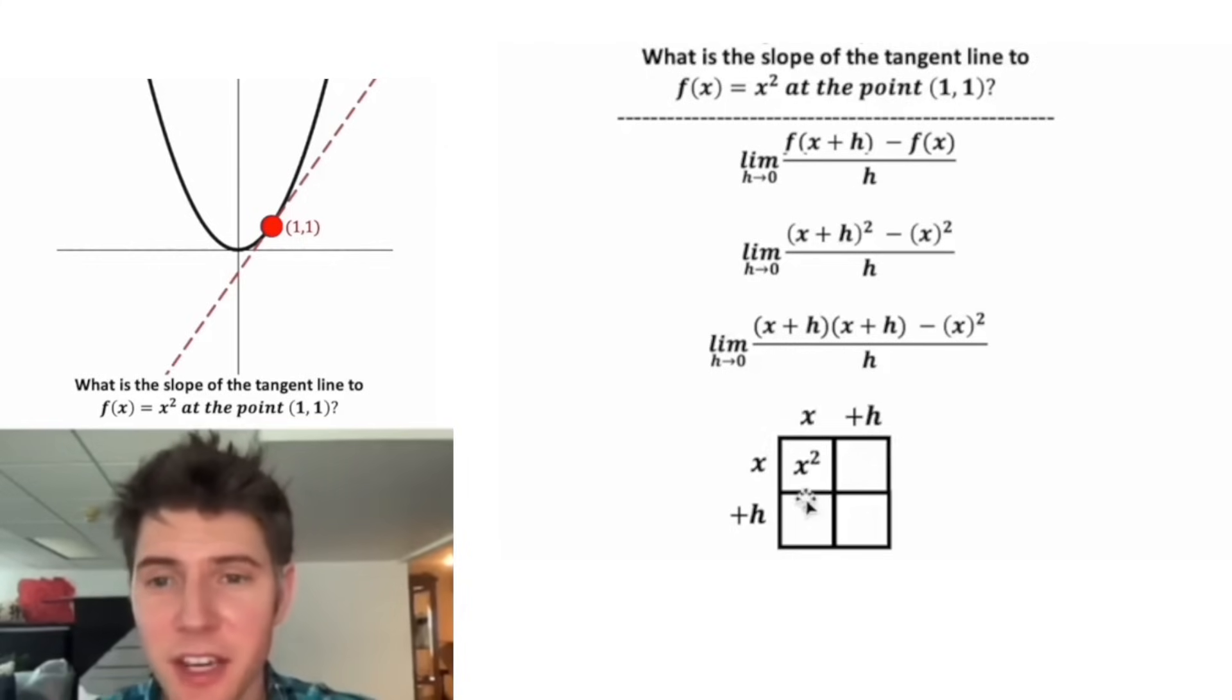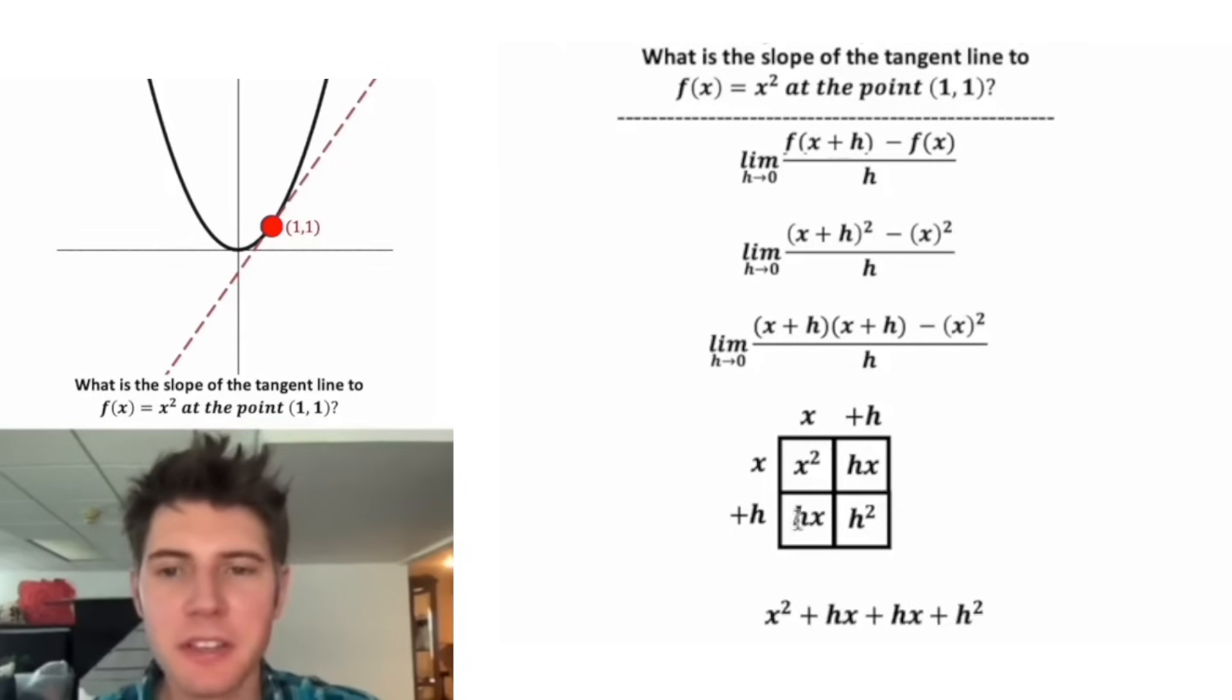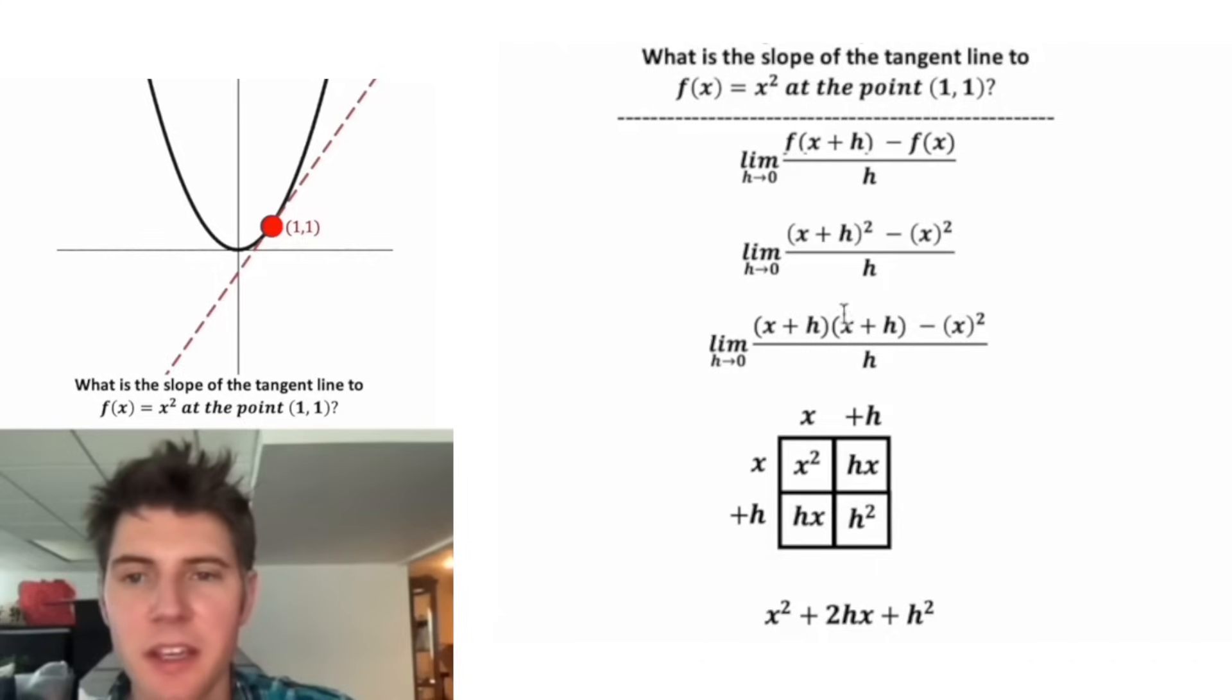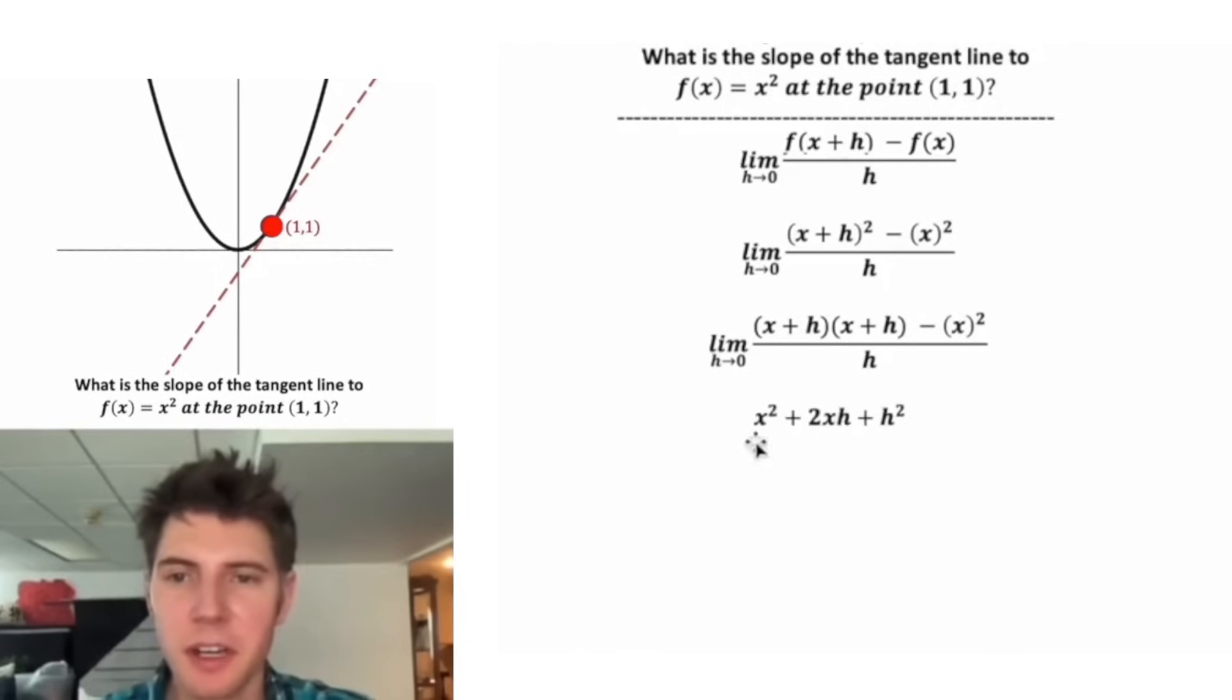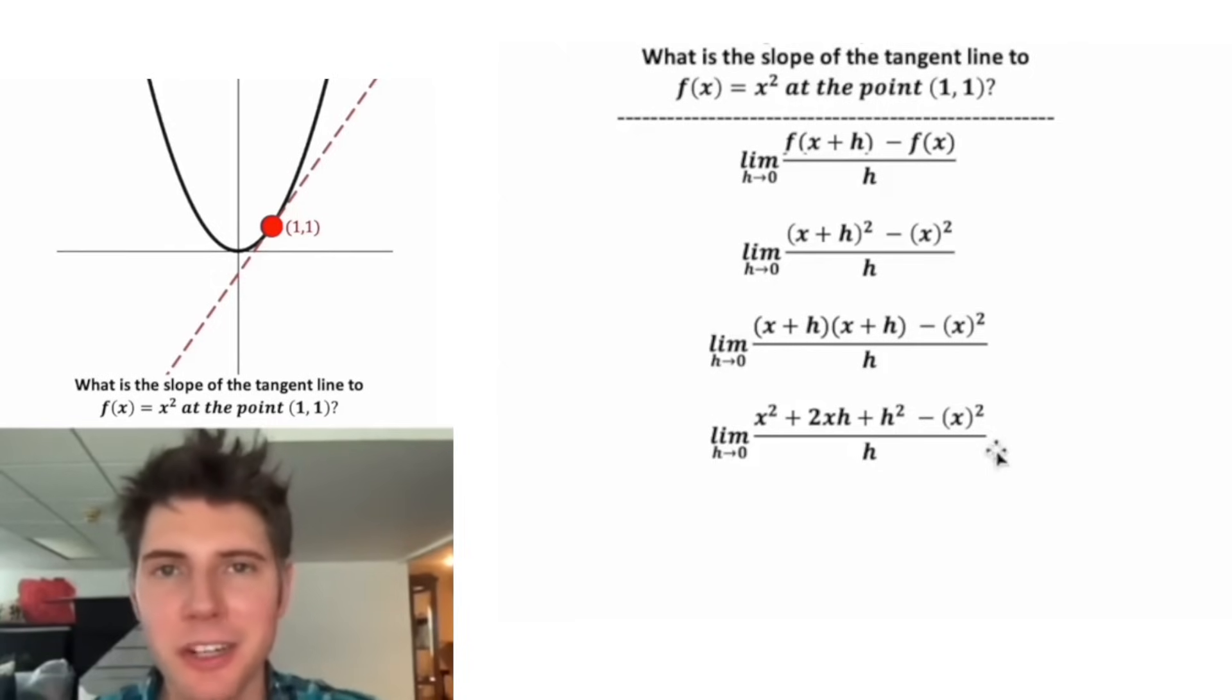So x times x, that's x squared. x times h is hx. This h times x is hx. And h times h is h squared. So we can add up the inside stuff to get this here. And these two can be combined. This is the same thing as x plus h times x plus h. We'll get rid of this and put this up here and bring the rest of the formula down. This x squared and this negative x squared can cancel each other out. And we can clean this up.